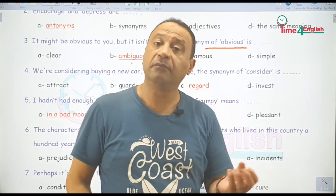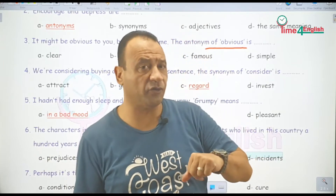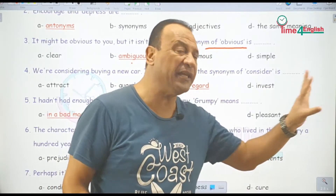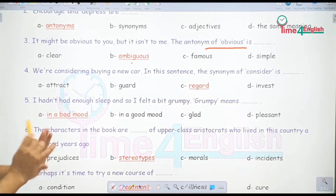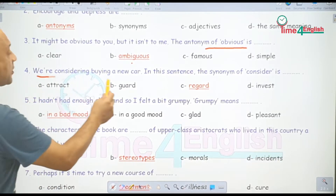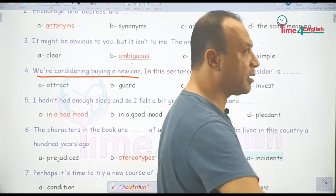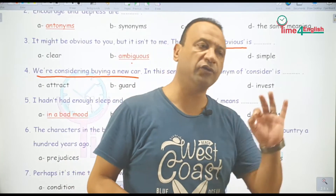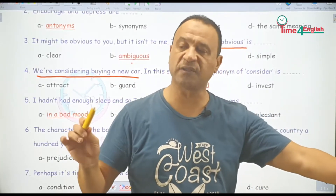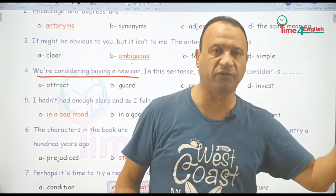Ambiguous يعني غامض. Vague — v-a-g-u-e — يعني not clear enough. We are considering buying a new car — إحنا بنفكر نشتري عربية جديدة. To consider doing something — لازم بعدها gerund بـ ing. ممكن تستبدلها بالمرادف ليها regard — to regard doing something.